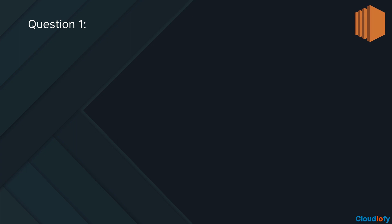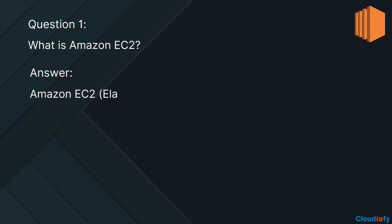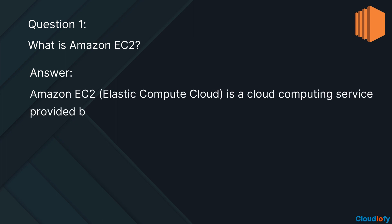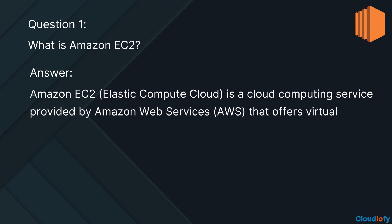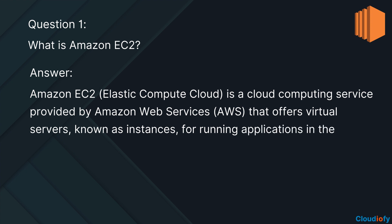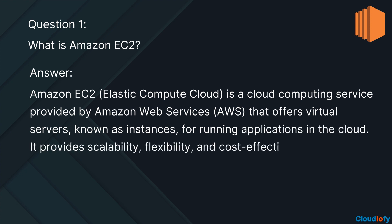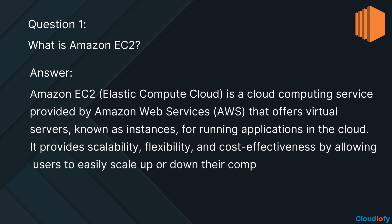The first question is: what is Amazon EC2? Amazon EC2, Elastic Compute Cloud, is a cloud computing service provided by Amazon Web Services that offers virtual servers, known as instances, for running applications in the cloud. It provides scalability, flexibility, and cost-effectiveness by allowing users to easily scale up or down their compute capacity based on their needs.